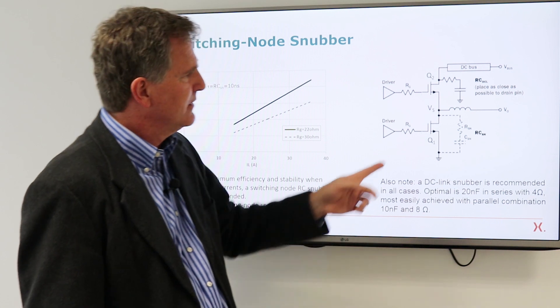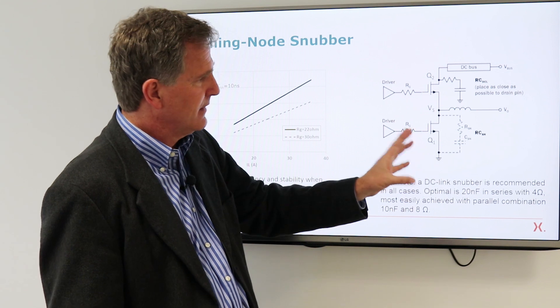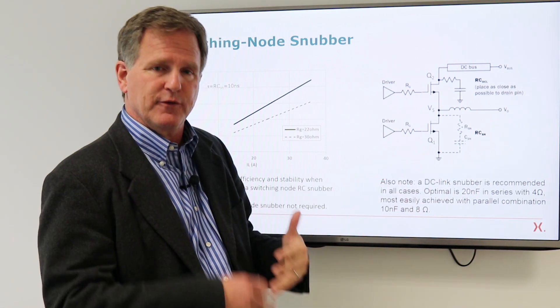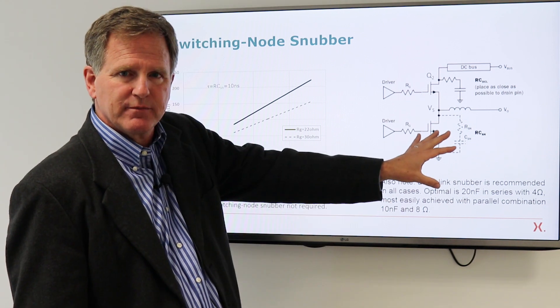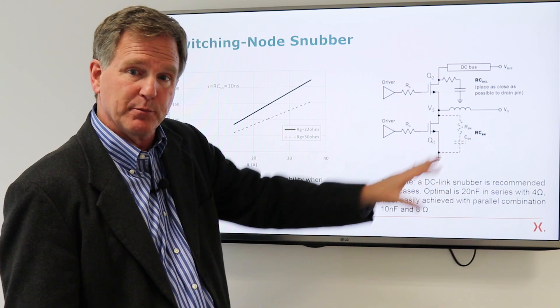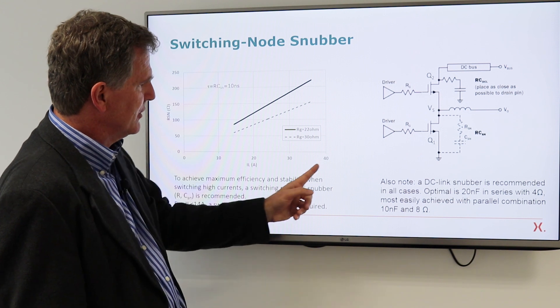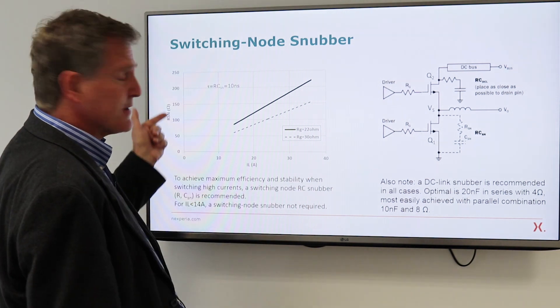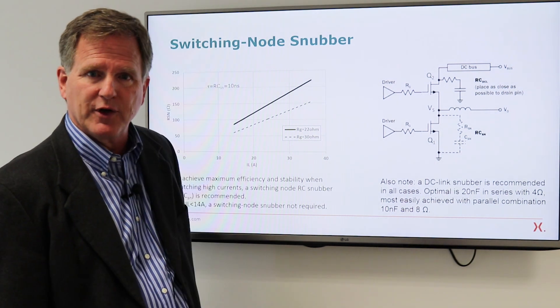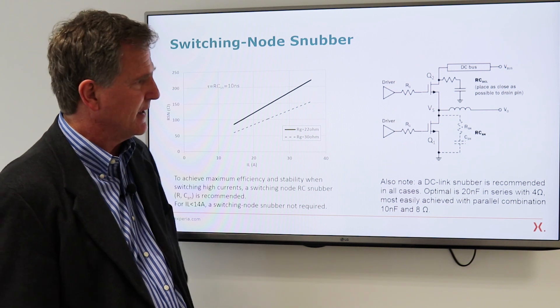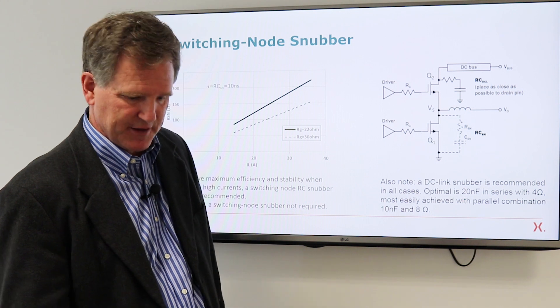For very high currents, we'll also recommend an RC snubber at the switching node. Now this will increase switching loss, and so we only recommend it at high power levels where it is not really an appreciable element of loss, but it does improve stability. And that's what this chart is showing you, is as the switch current increases, this is the value of snubber resistance we recommend, and then a capacitance that gives an RC time constant of 10 nanoseconds. So again, for high currents, we do recommend using that RC snubber on the switching node.